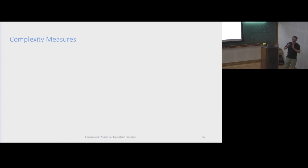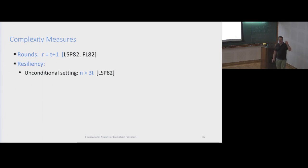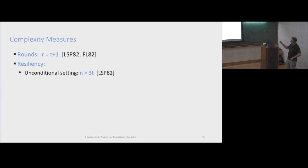I'm going to go into some of the complexity measures, because we're going to contrast these measures in the classical pre-blockchain world with the new bounds that we can achieve. It turns out that for deterministic problems, you have to run for a number of rounds linear in the number of corrupted parties. And resiliency - meaning the number of corruptions that you can tolerate - is one-third in the unconditional setting, meaning no crypto.